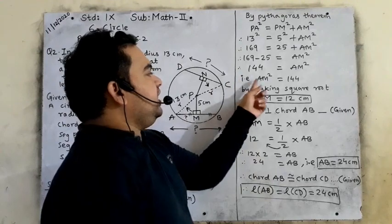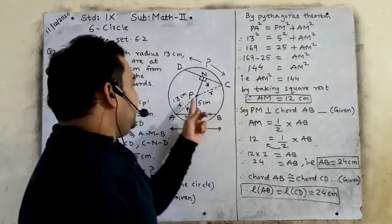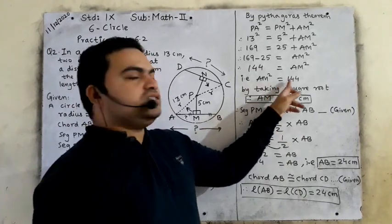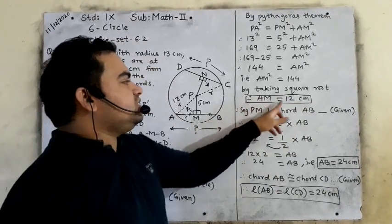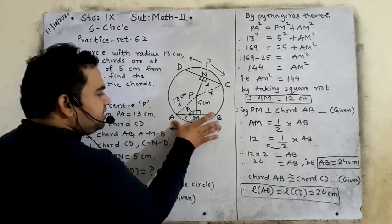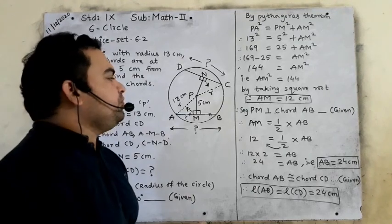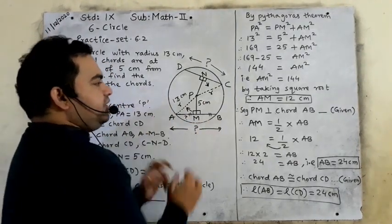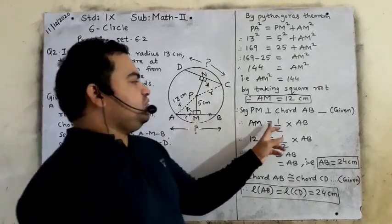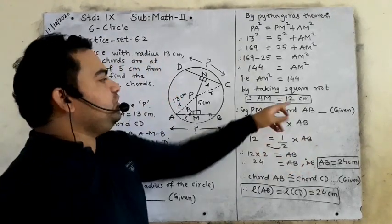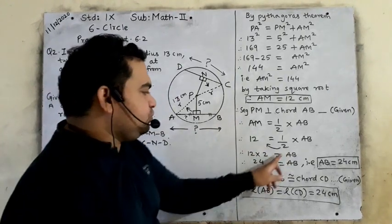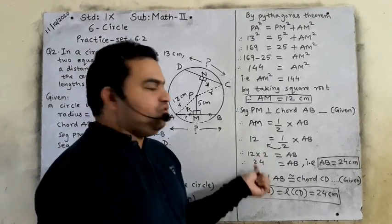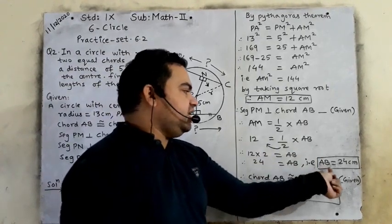AM² equals 144. Taking the square root — 144 is the perfect square of 12 — AM equals 12 cm. Since segment PM is perpendicular on chord AB, AM is half of chord AB. So AB equals 2 × AM. AM is 12, so AB equals 2 × 12 equals 24 cm.